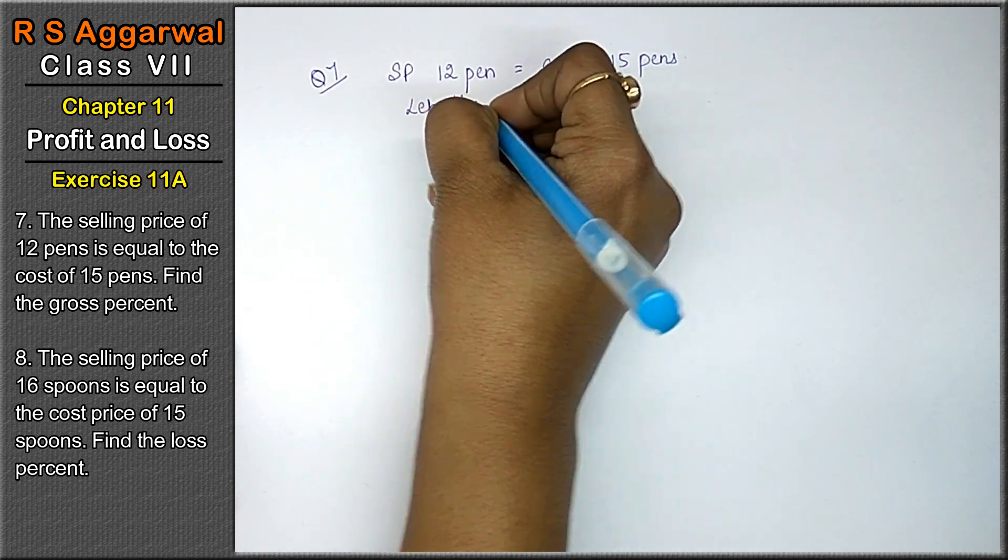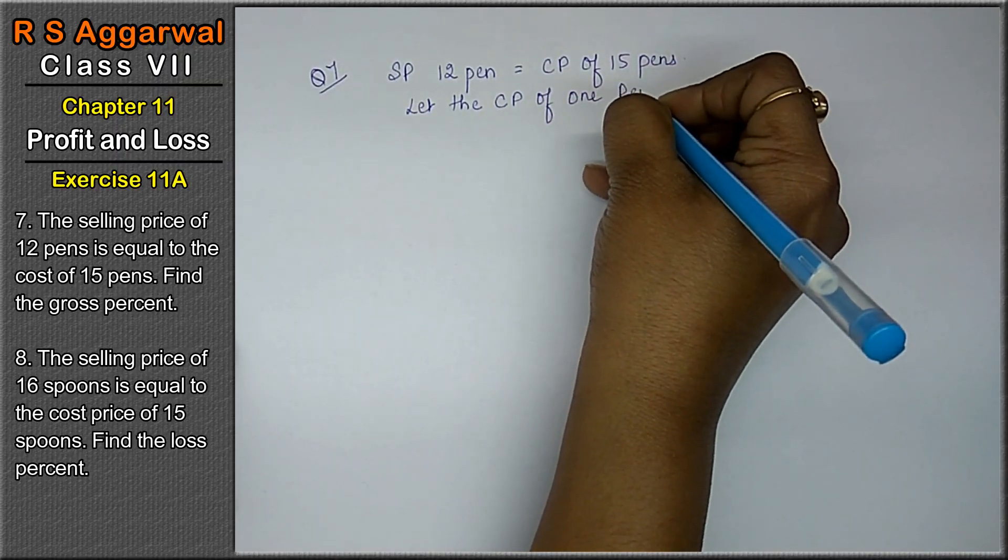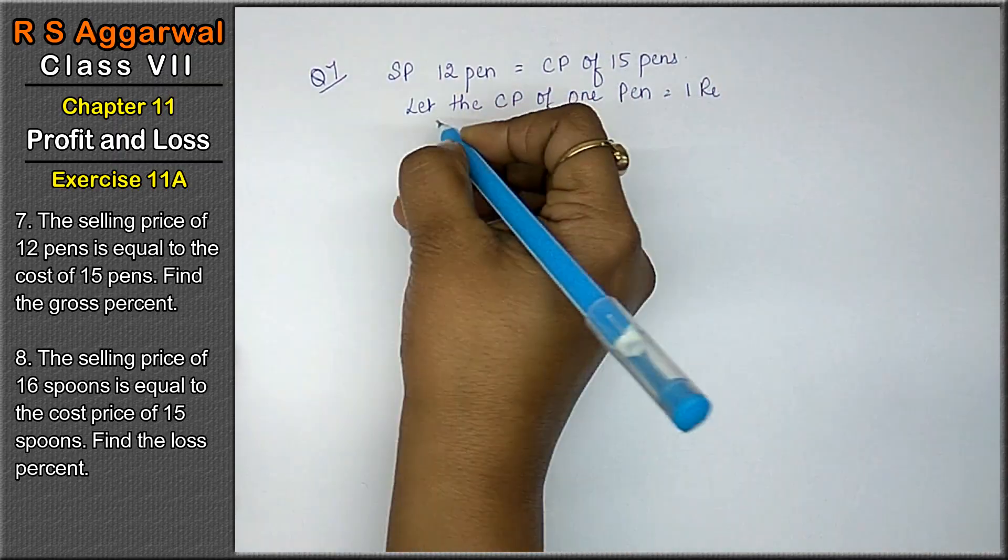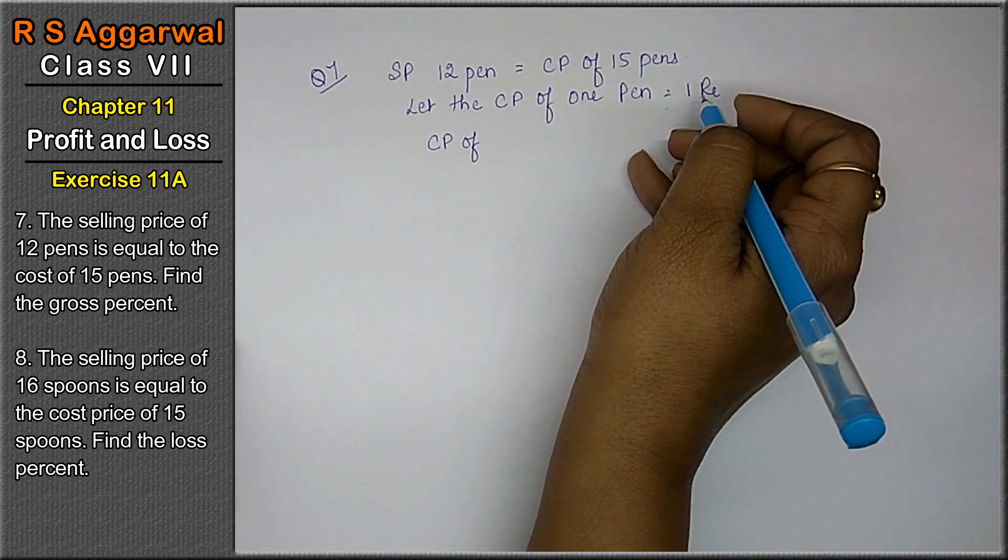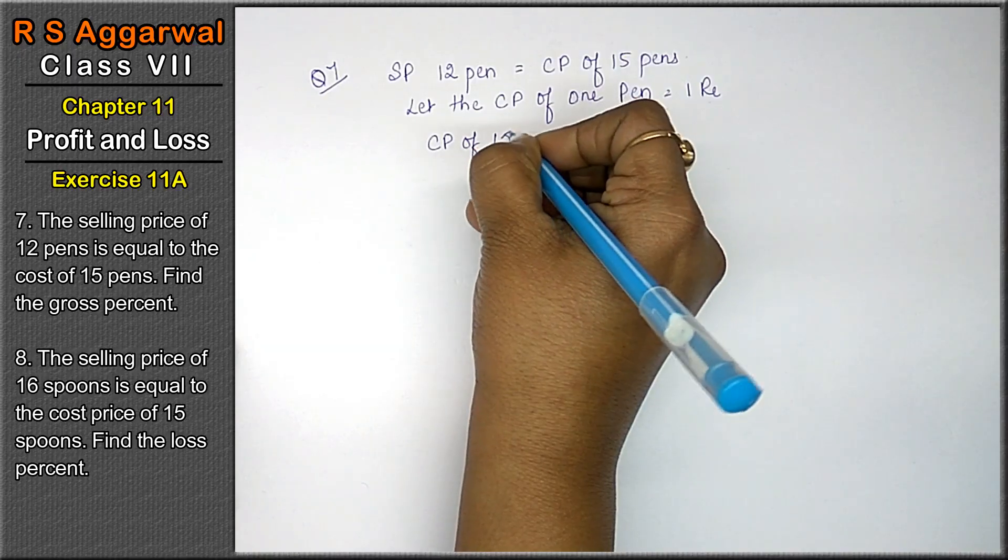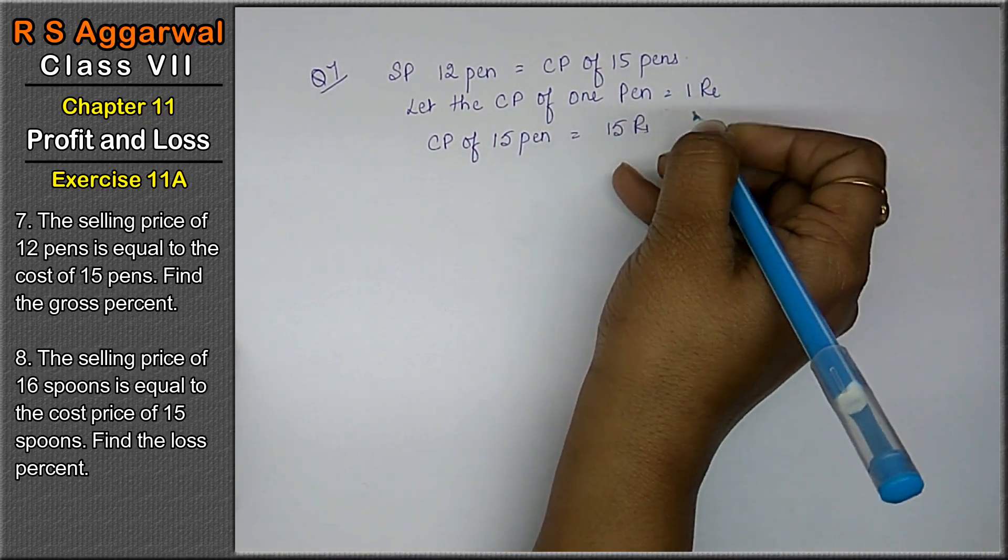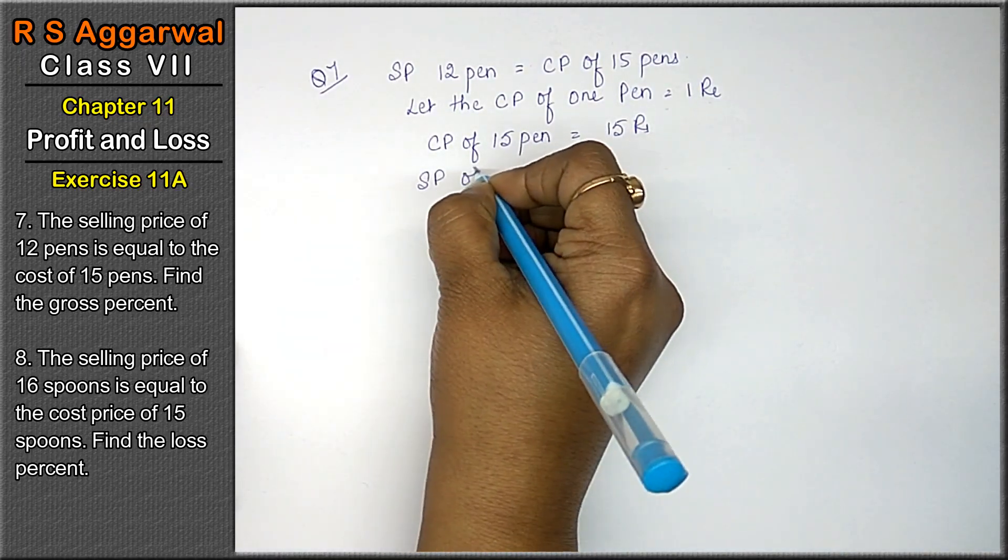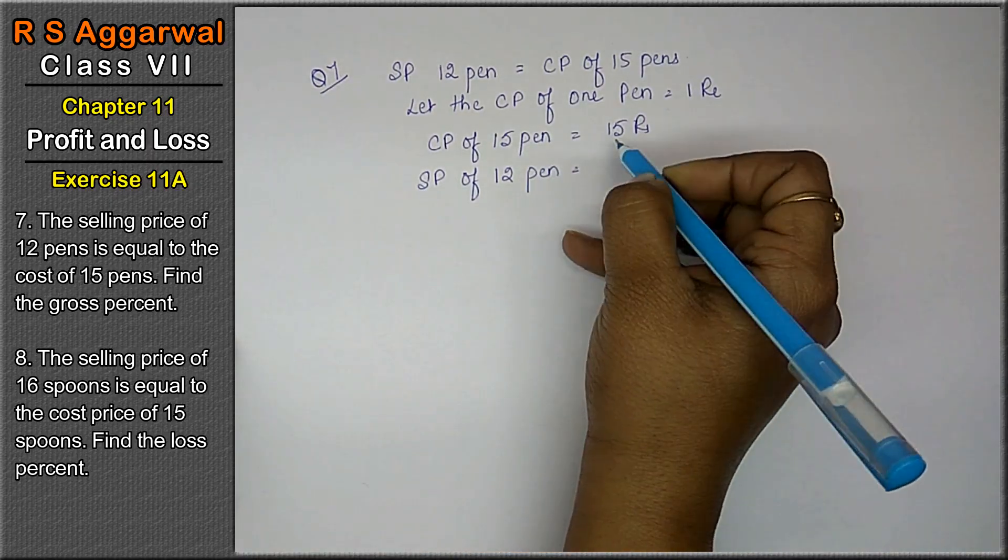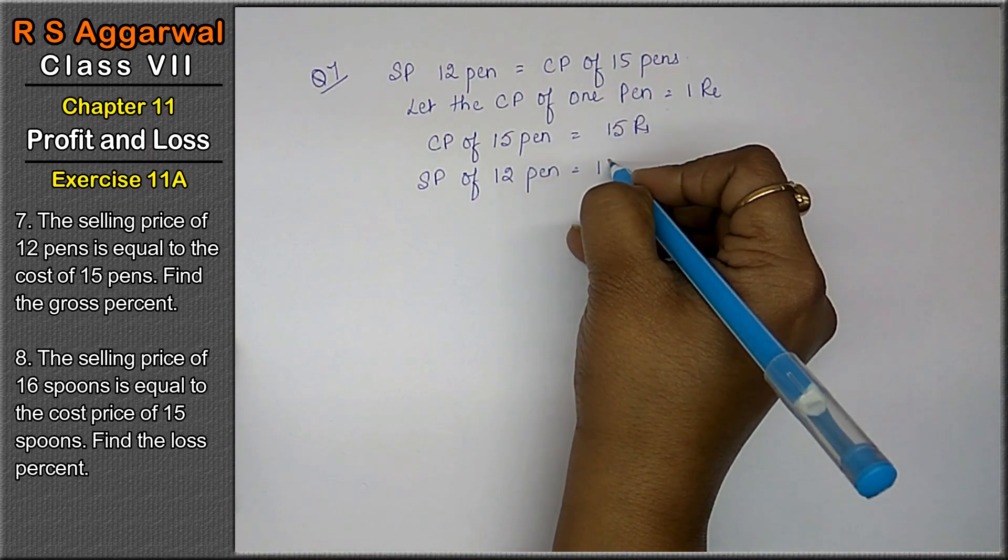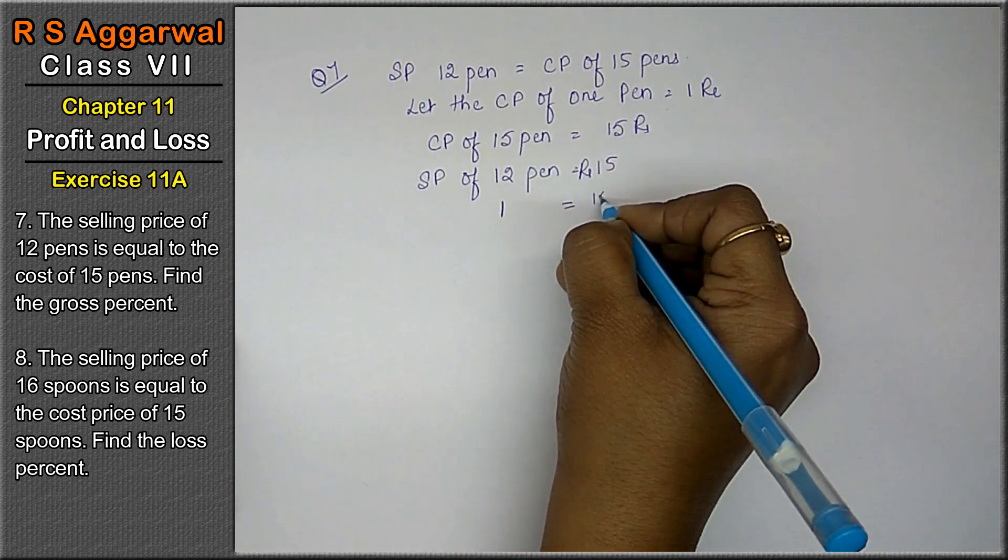Friends, in this case, let the cost price of one pen equals to one rupee. Then the cost price of 15 pens equals 15 rupees. Now the selling price of 12 pens equals 15 rupees.